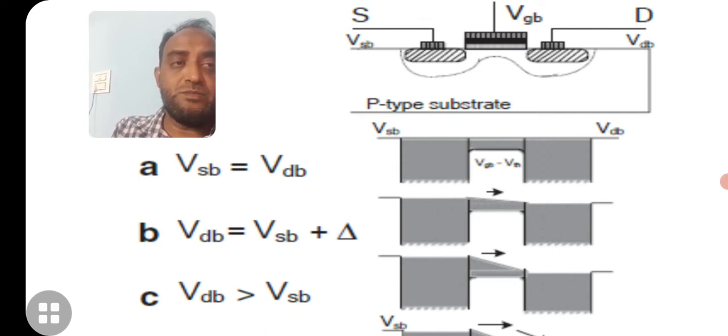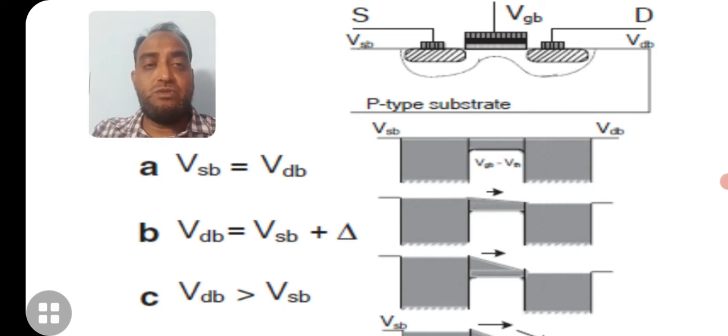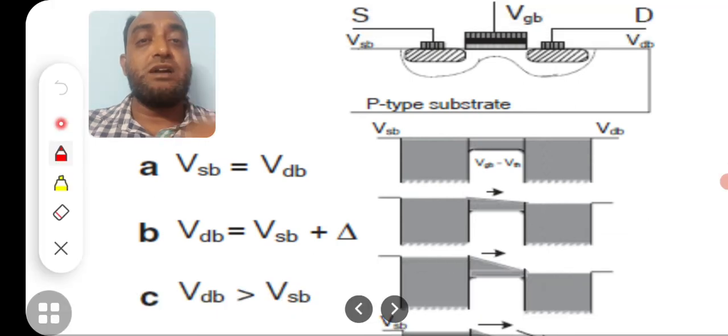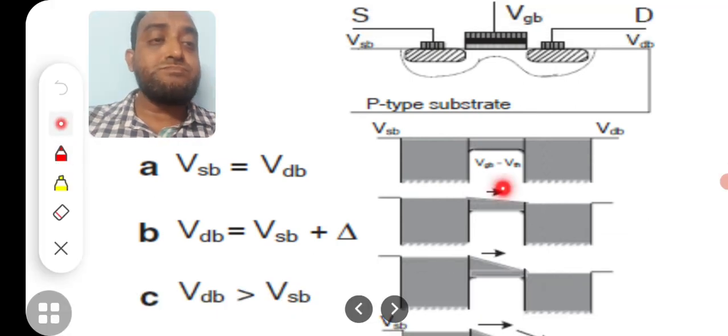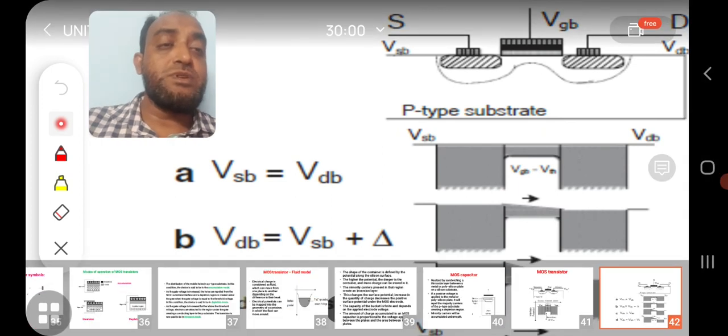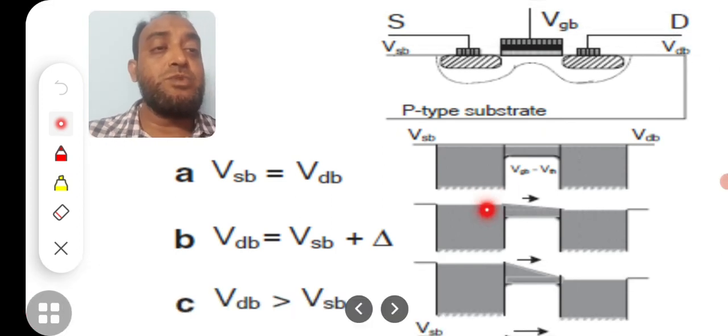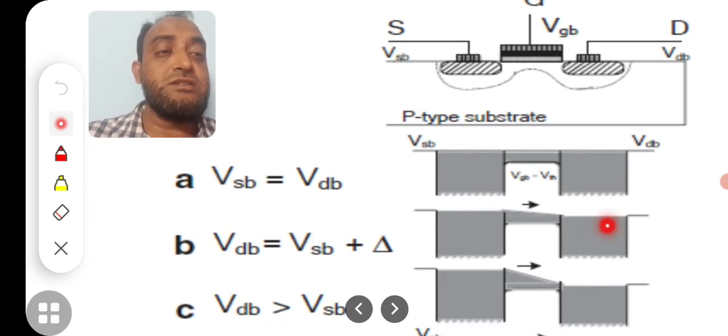Unless there is a difference between the potentials Vsb and Vdb, there won't be any current. Now in case 2, Vdb is made slightly higher than Vsb by an amount of delta. Then you can clearly see that there is a level difference between source and drain, and a current moment and charge carrier moment takes place, which is represented by an arrow in the side diagram. This arrow represents the moment of current because of the high potential here and low potential level here in this side.